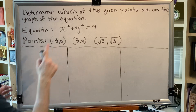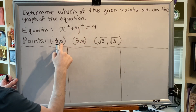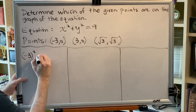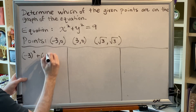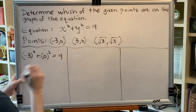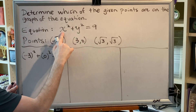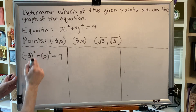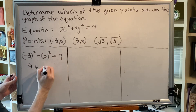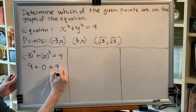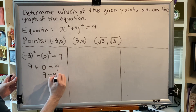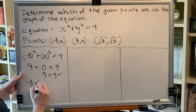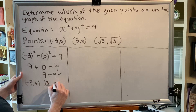Let's begin. We replace each x with the x-coordinate and each y with the y-coordinate. We get (-3) squared plus (0) squared equals 9. I'm using parentheses because the variables being replaced both have exponents. Negative 3 squared is 9, 0 squared is 0, and 9 plus 0 is 9. The left side and right side match, so (-3, 0) is a solution.